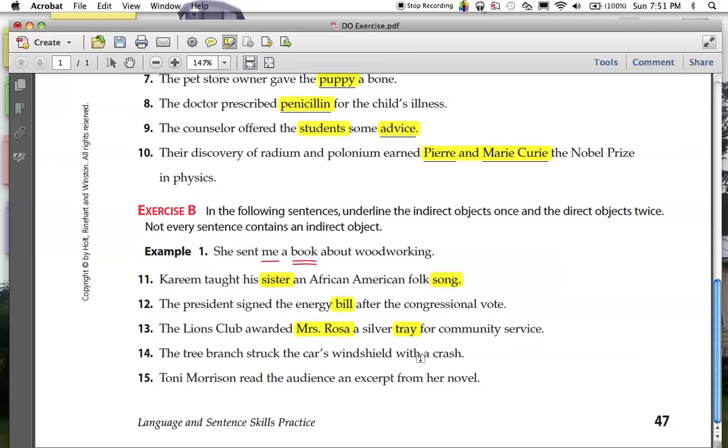14. The tree branch struck the car's what? Windshield. Direct object. Did it strike that windshield two or four? No. Strike is one of those verbs that usually doesn't have an indirect object. Windshield. Direct object.